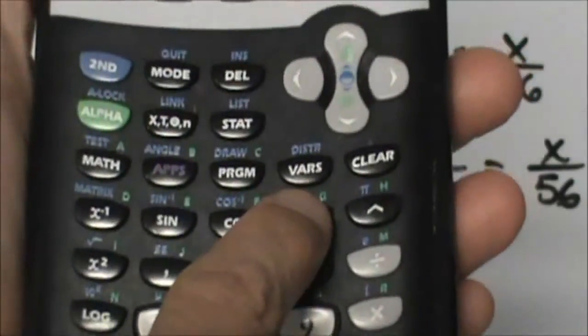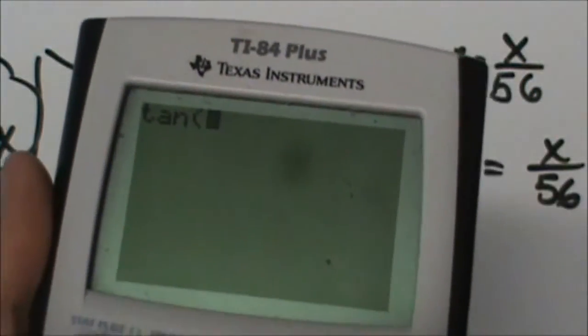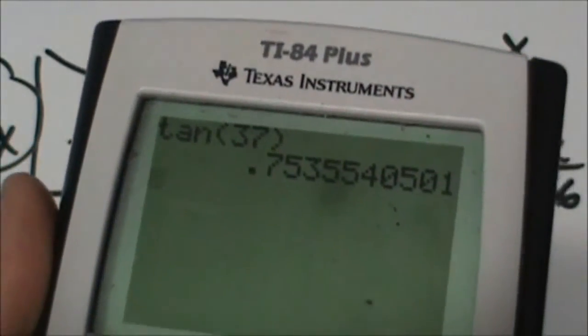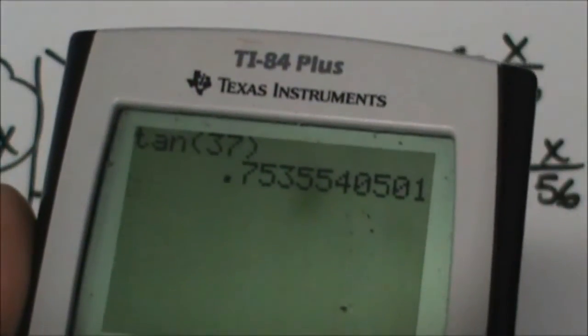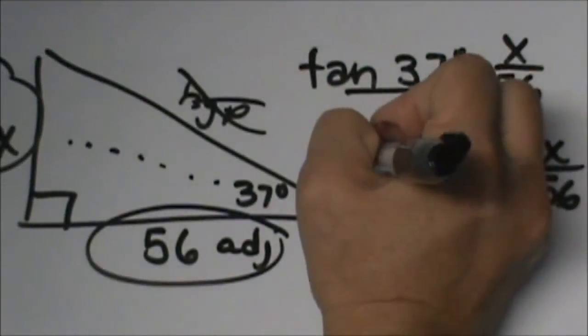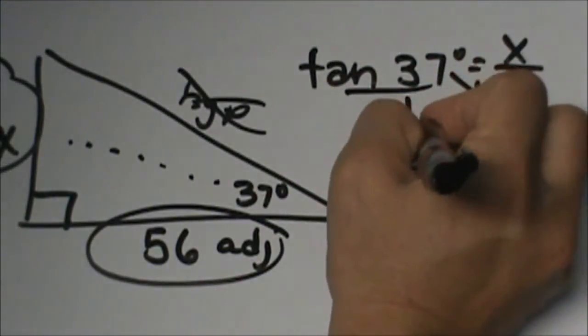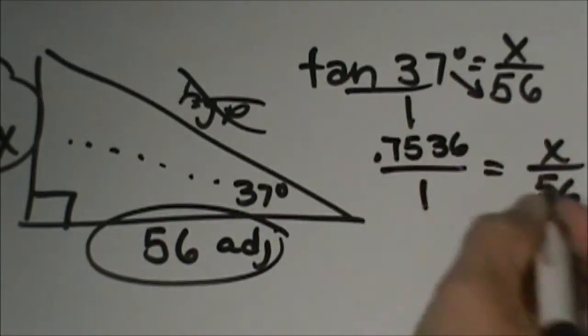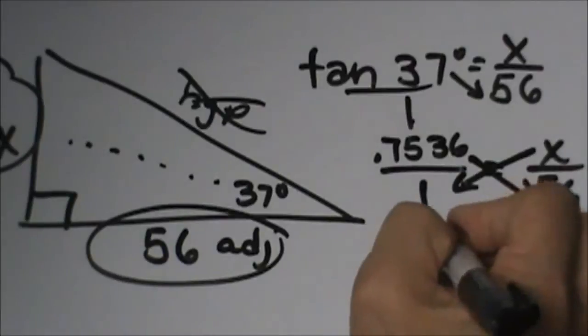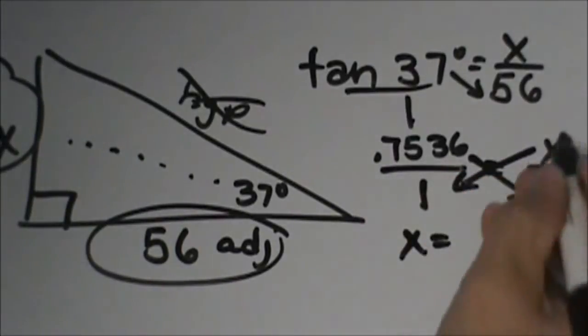So I am going to go forward and take the tangent of 37 degrees. I close my bracket and I get 0.7536 all over 1 and now I am going to work my cross product. So when the variable is on top it is a little easier because x times 1 is just x.